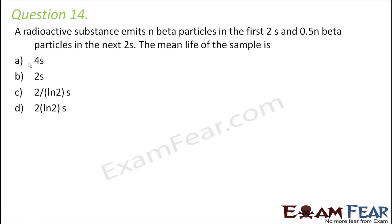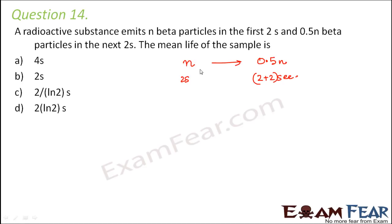Question number 14. A radioactive substance emits N beta particles in the first two seconds and 0.5N beta particles in the next two seconds. The mean life of the sample is — so it emits N beta particles in the first two seconds and 0.5N in the next two seconds, meaning the particles are just getting halved. So the time taken for the substance to go from N to 0.5N is its half-life, which means T-half equals two seconds.